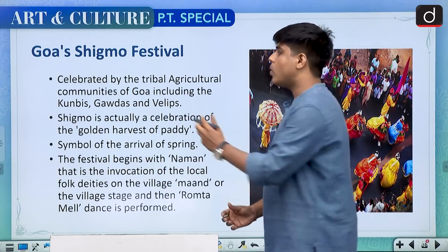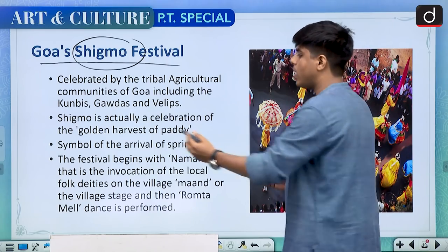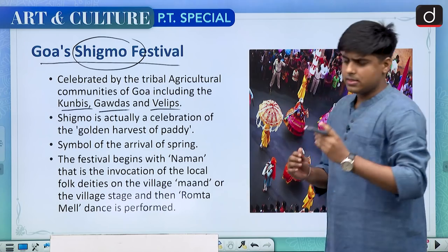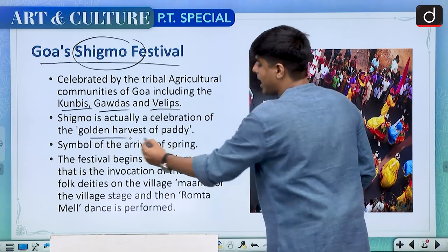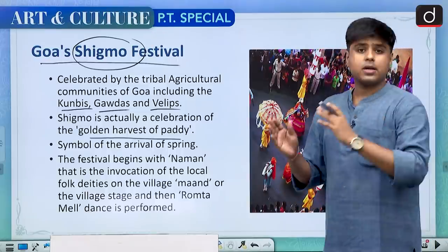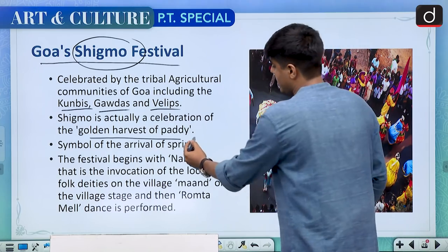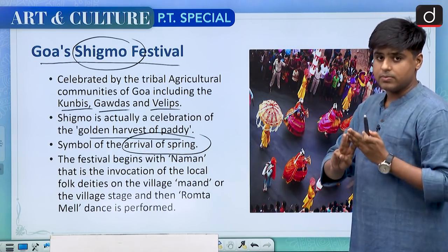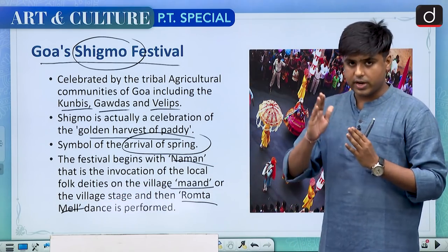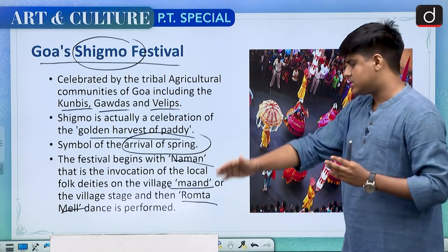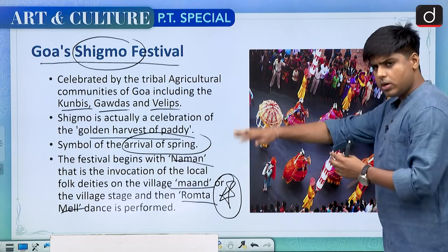Moving on to the next important festival, Goa's Shigmo festival is celebrated by tribal communities of Goa — Kunbis, Gauras and Willips. It is related to the harvest of a certain crop, in this case pedi, and stands for the golden harvest of pedi. It is a symbol of the arrival of spring. Three important terms associated with this festival are Naman (the invocation of folk deities), Mand (the village stage), and Romta Mel (the dance performed). A separate question can be asked on these particular terms.